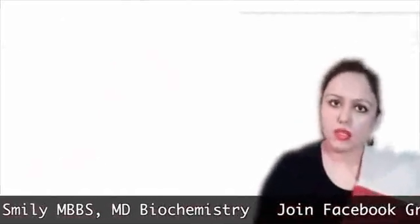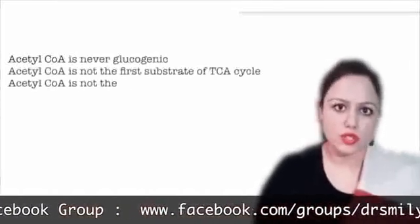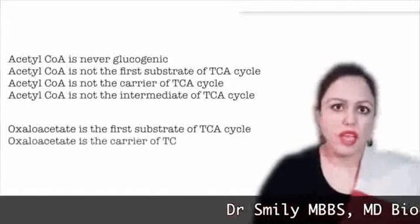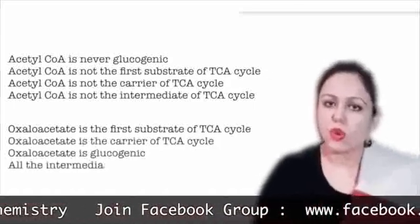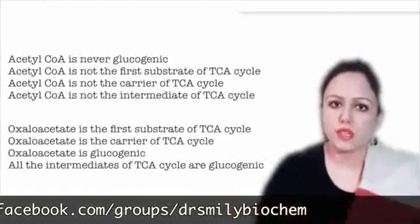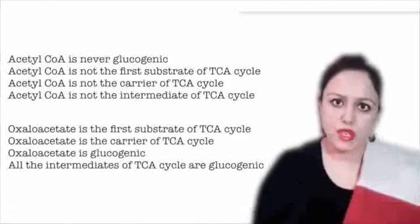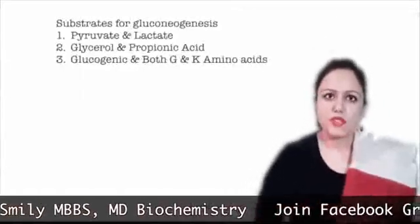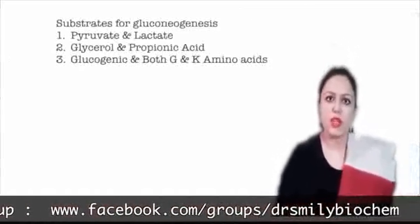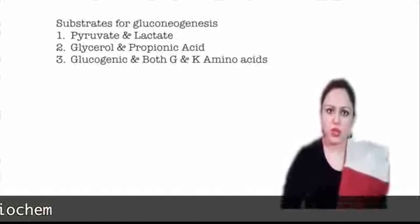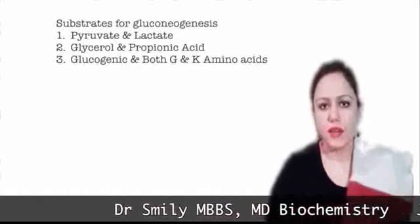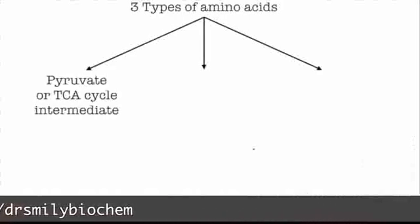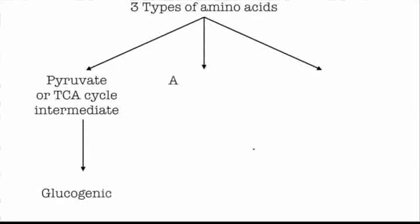Important points about acetyl-CoA: it is never glucogenic, it is not the first substrate of TCA cycle, it is not the carrier of TCA cycle, and it is not an intermediate of TCA cycle. Oxaloacetate is the first substrate and carrier of TCA cycle, and oxaloacetate is glucogenic. All intermediates of TCA cycle are glucogenic. Substrates for gluconeogenesis include pyruvate and lactate, glycerol and propionic acid. There are three types of amino acids depending on catabolic fate: glucogenic, ketogenic, and both glucogenic and ketogenic.